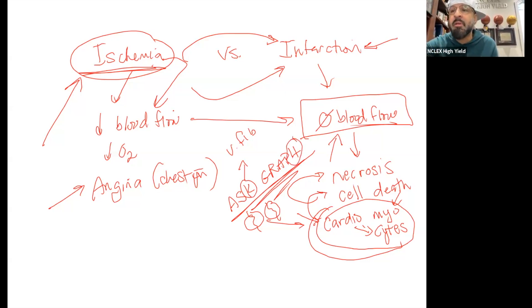So again, ischemia - lack of blood flow, lack of oxygen, can lead to chest pain or angina. Infarct - full-blown block of blood flow, leading to necrosis, cell death, or looking out for ass graft.